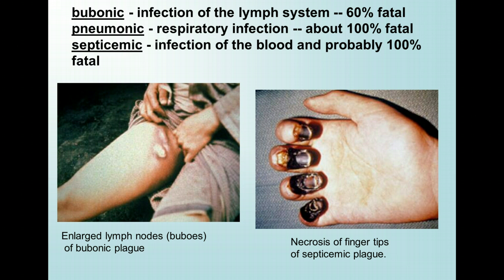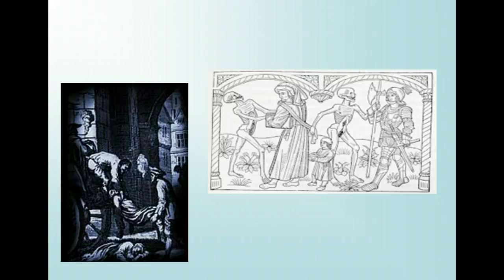Those with respiratory plague also died quickly, but not before developing evident symptoms: a sudden fever that turned their face a dark rose color, a sudden attack of sneezing, followed by coughing, coughing up blood, and then death. From the Decameron by Giovanni Boccaccio, we have further images of the Black Death.